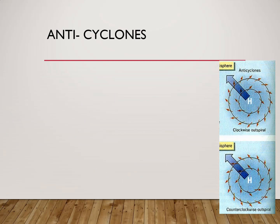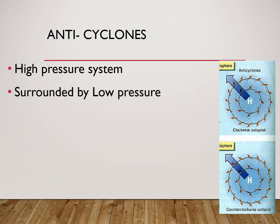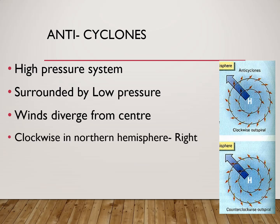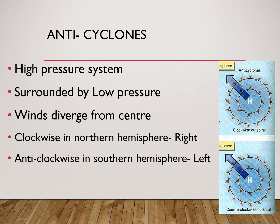Anticyclones are regions of high pressure on the surface of the Earth, and this high pressure system is surrounded by low pressure on all sides. Winds are moving out of the high pressure regions in both hemispheres, so winds diverge from the center of the high pressure system. Anticyclones move clockwise in the Northern Hemisphere as winds are deflected towards their right, and anticlockwise in the Southern Hemisphere as winds are deflected towards the left. Because winds are moving out of this system, they blow away all the clouds in the atmosphere, creating clear skies and fair weather.